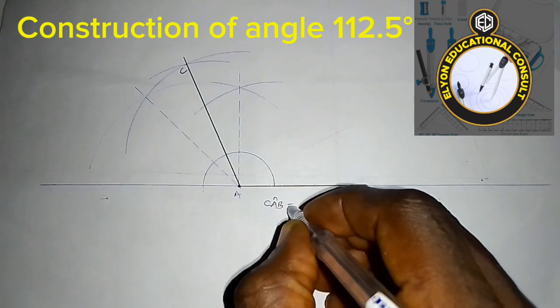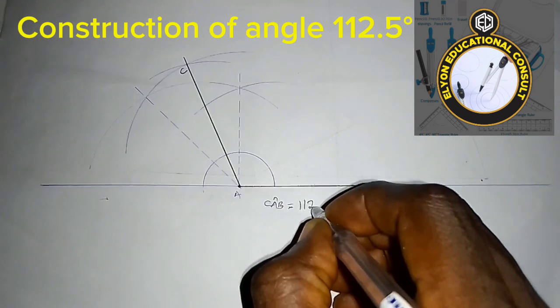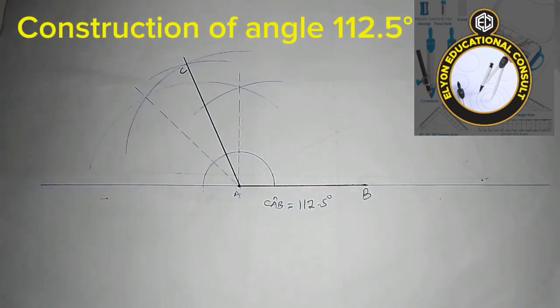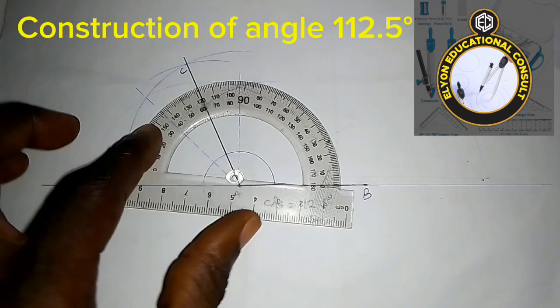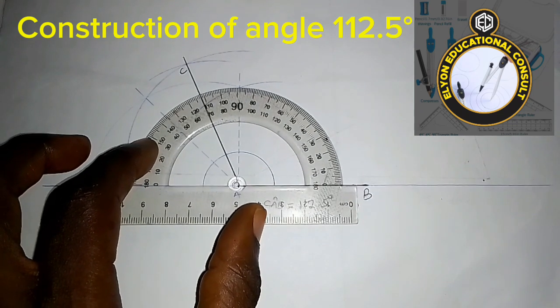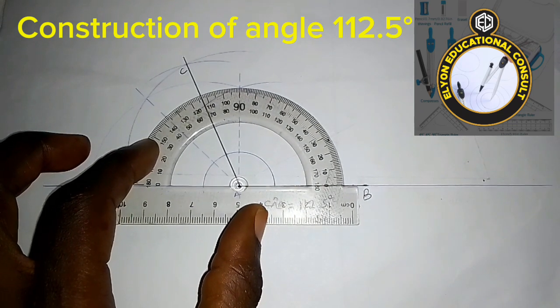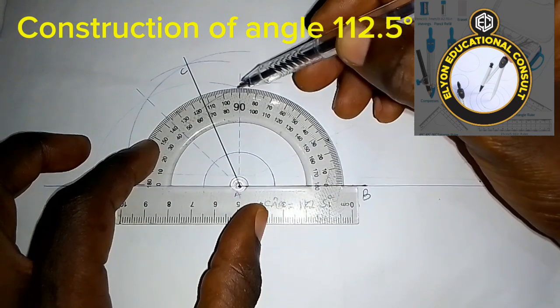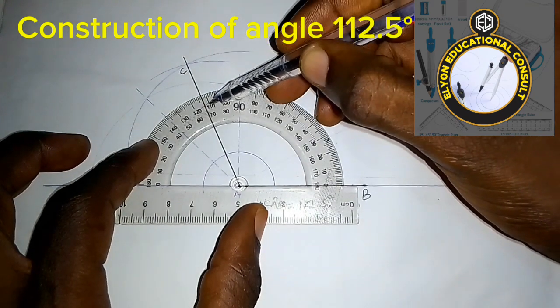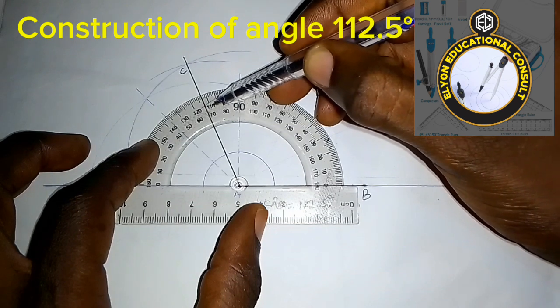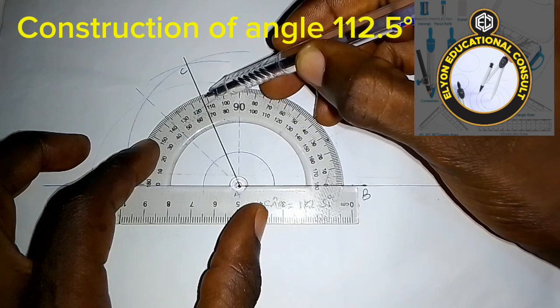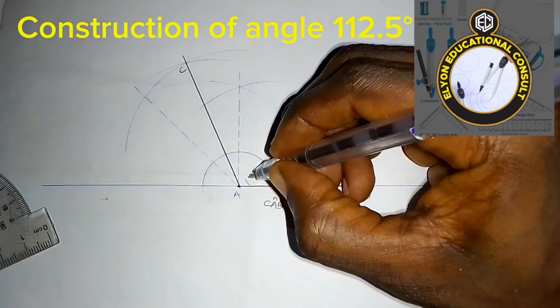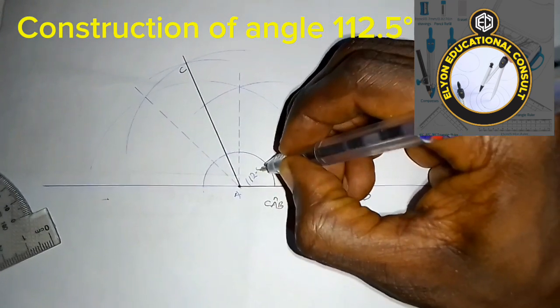is 112.5 degrees. We'll be testing that now. We'll place our protractor this way. You can see that this angle here is 90 degrees. This is 110, 111, 112.5 degrees. So this angle is 112.5 degrees.